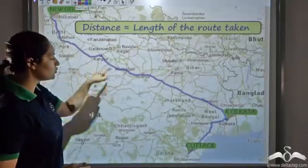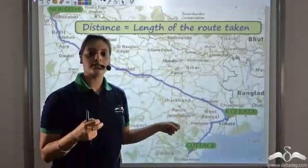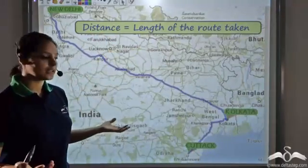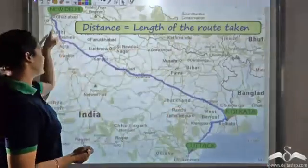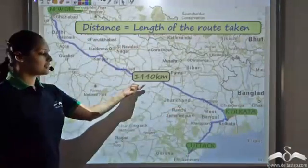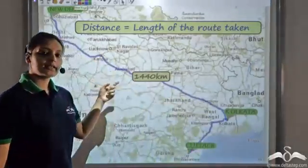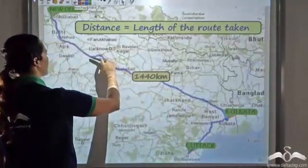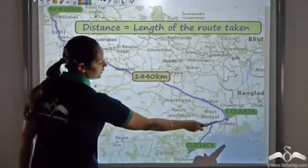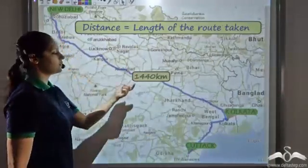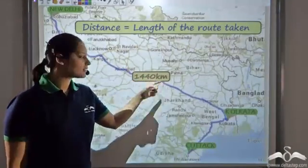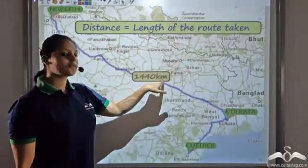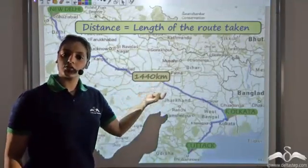So this length of route taken between two places or two points is what we define as distance. Since they had a longer vacation, they decided to go from Kolkata to New Delhi. The distance between Kolkata and New Delhi is fourteen hundred and forty kilometers. Kilometer is a common unit of distance; we can also have distance in meters.